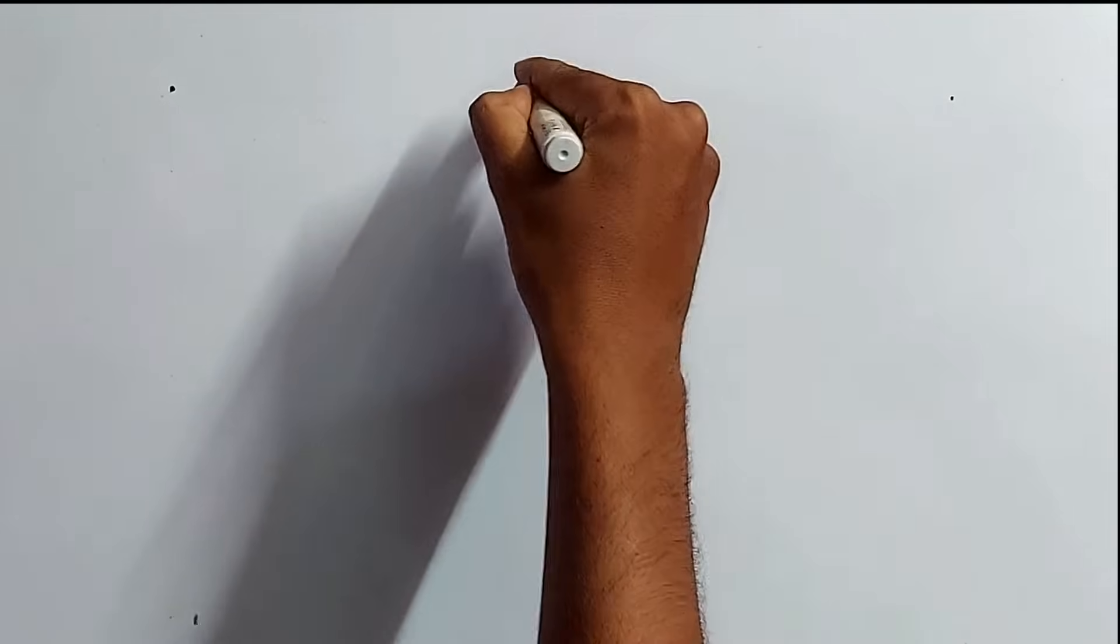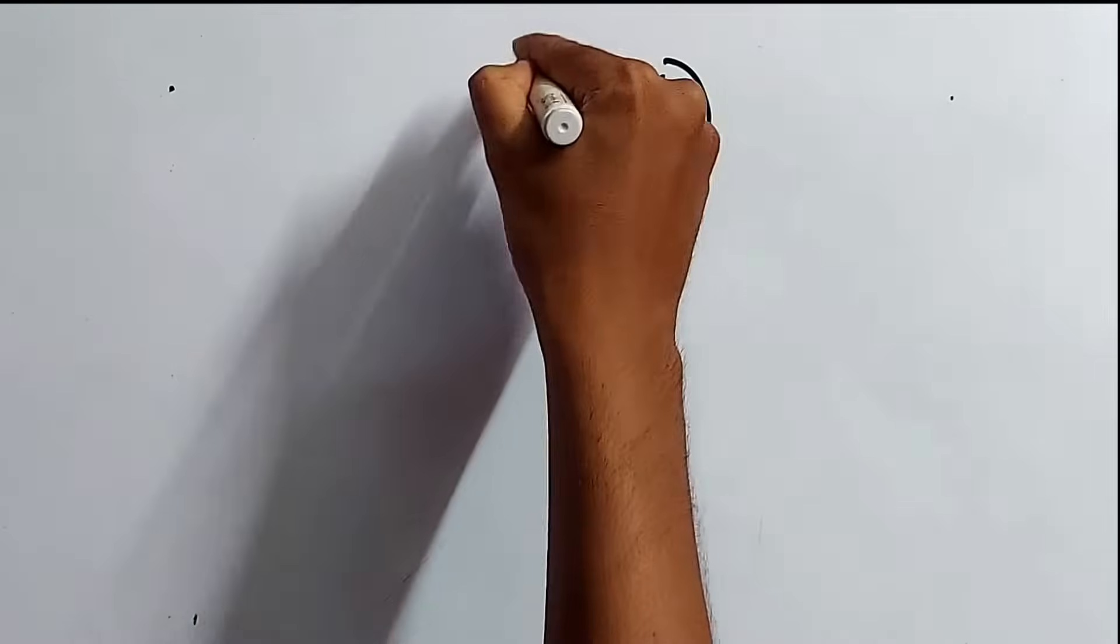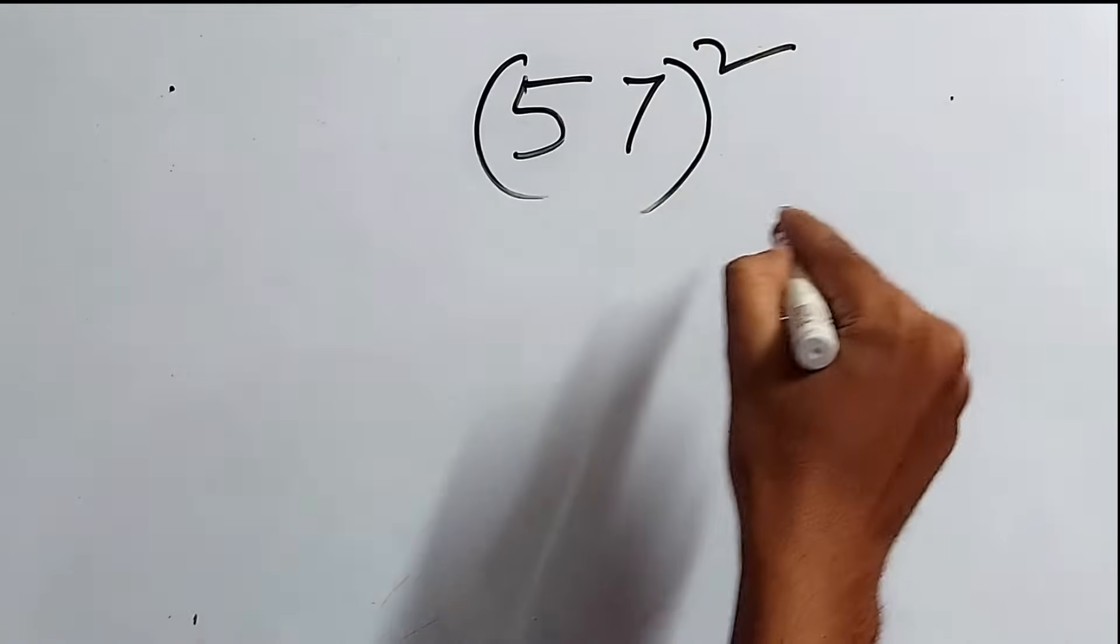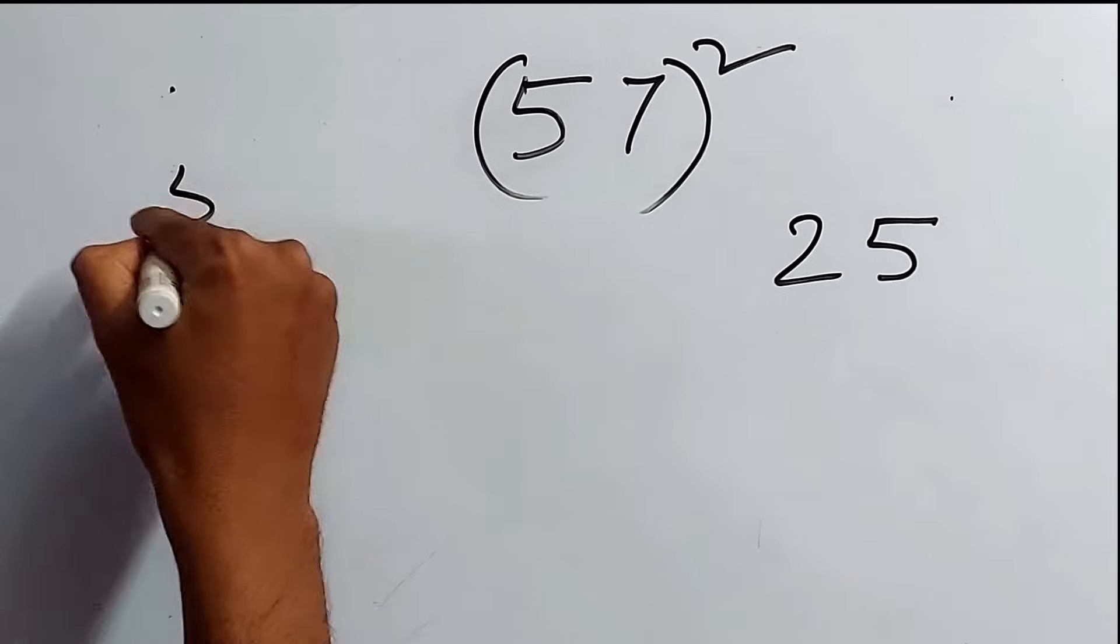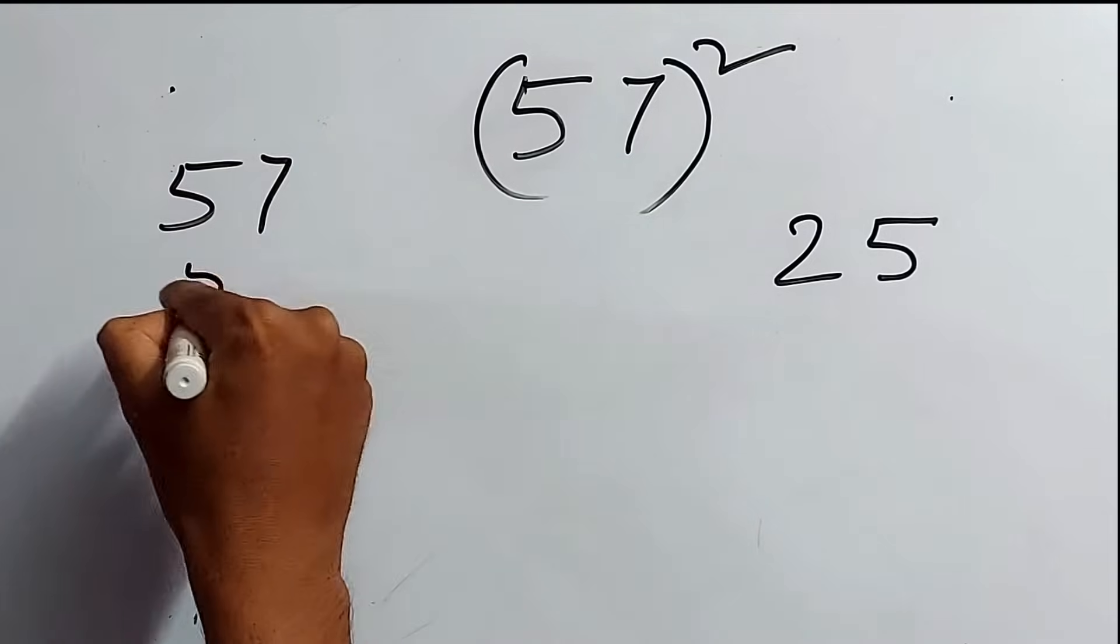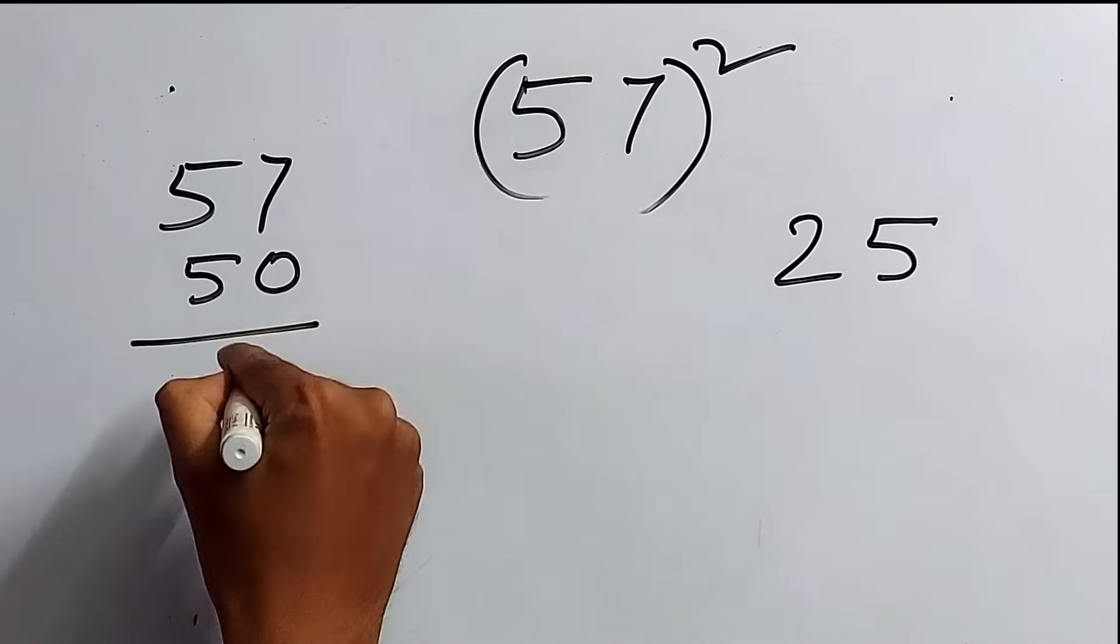But, when the number is more than 50, what to do? Something like 57. Same way. First thing, just keep 25 somewhere. And, now, 57 minus 50. That is 7.